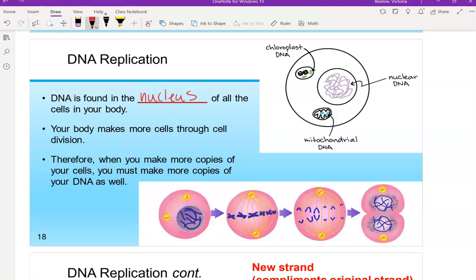Your body is constantly making more cells through cell division, which will actually be our next unit. And if you're making more cells in your body, you're constantly growing, you are repairing, you're replacing cells, especially in your skin for example. If you're going to make more copies of your cells, you're going to have to make copies of your DNA as well. So that is what DNA replication is.